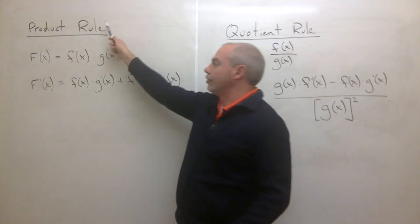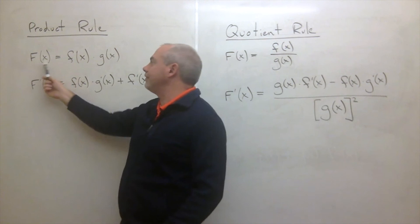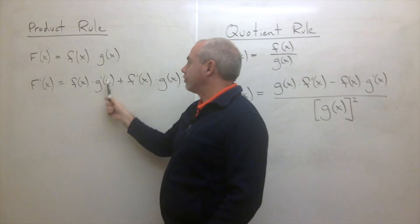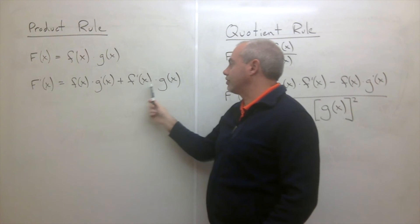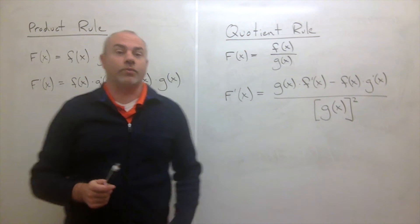So now we know the product rule, written here one more time: the derivative of the product of two functions is the first function times the derivative of the second function, plus the derivative of the first function times the second function.